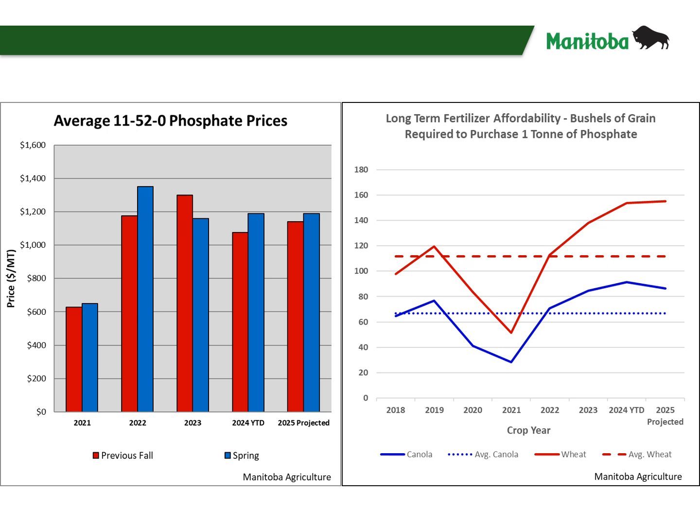When we focus in on phosphorus, we can see that phosphorus is still very expensive. The bar chart on the left shows phosphorus pricing for the previous fall and spring. In 2022, phosphorus pricing took a considerable step higher and has only come down marginally over the last couple years. When we consider the price of grain, looking at the chart on the right, we can see that phosphorus is very expensive. The line chart in red on the top is wheat, with the blue on the bottom being canola. The dotted lines are again the average amount of bushels of grain required to purchase one ton of phosphorus. As with both commodities, phosphorus is very expensive when we consider the price of grain.